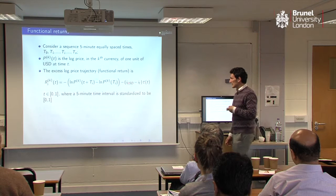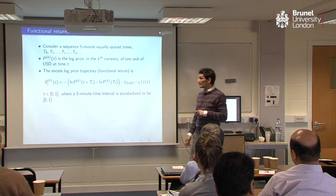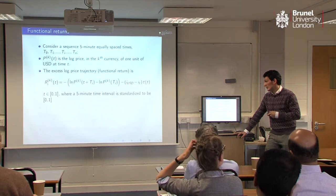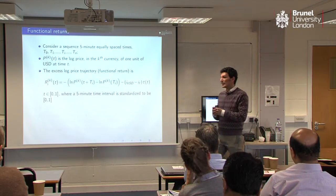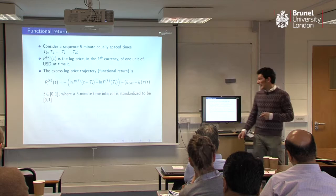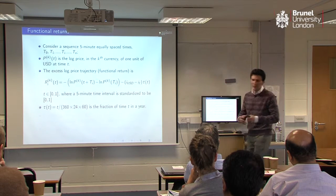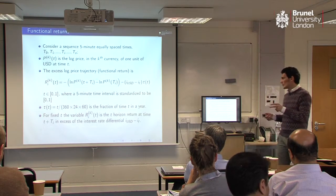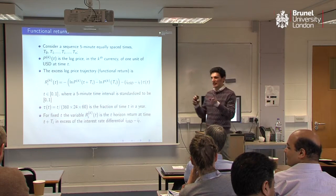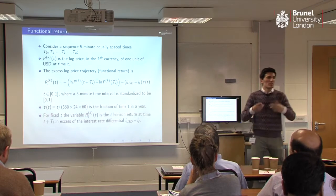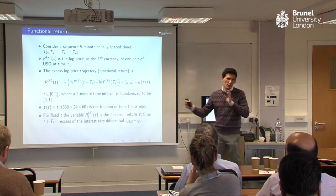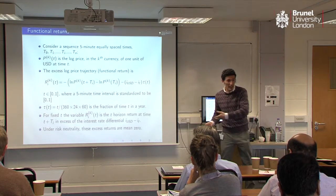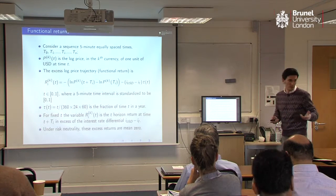This extra term is just the correction for the forward premium. I is the interest rate in USD and I^F is the interest rate in the foreign country, and tau is basically the fraction of time in a year. So I'm deriving essentially what you would call excess returns for stocks, but for currencies excess returns are defined in terms of the forward premium. All that means is that under risk neutrality, as for stocks, the expectation of this term is always zero.